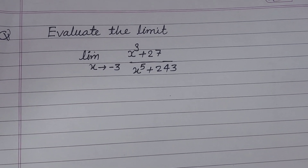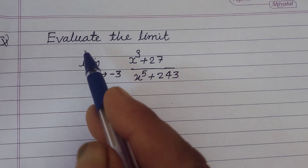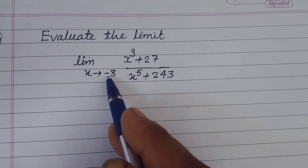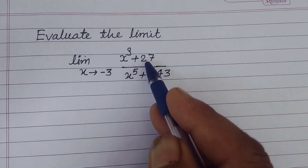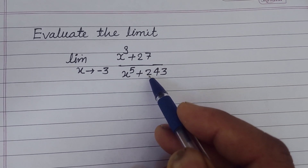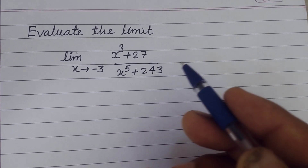Hello viewers, warm welcome to this YouTube channel. Let us evaluate the limit: x tends to minus 3, of x cubed plus 27 upon x to the power 5 plus 243.